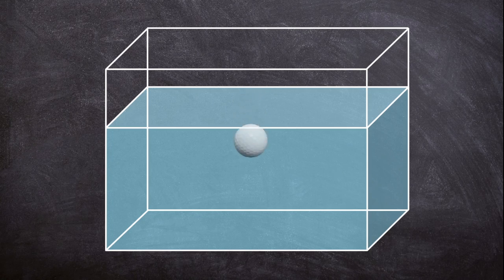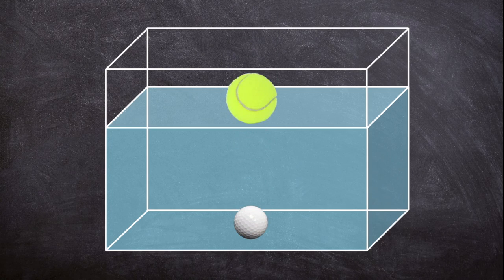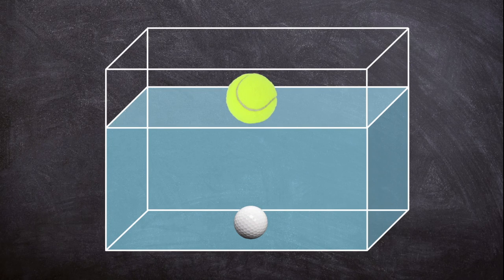What happens when you put a golf ball in water? It sinks. What happens when you put a tennis ball in water? It floats. Why do some objects sink and some objects float? It has to do with density.